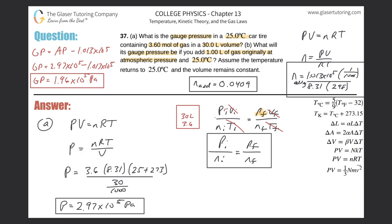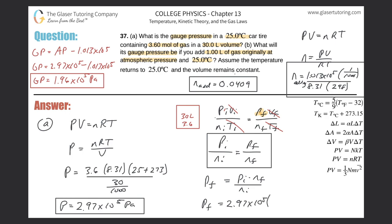That 0.0409 is the amount we're adding. The container already has 3.6 moles. So the final total moles is 3.6 + 0.0409. Now we can solve for final pressure: Pf = Pi × (nf / ni). The final pressure equals the initial absolute pressure of 2.97 × 10⁵ multiplied by (3.6 + 0.0409), divided by 3.6.